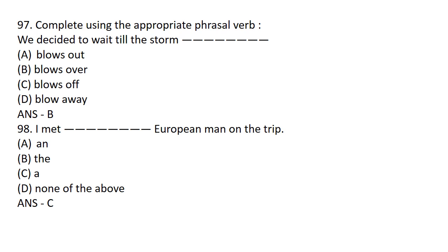Complete using the appropriate phrasal verb: We decided to wait till the storm dash. Option A: BLOWS OUT. Option B: BLOWS OVER. Option C: BLOWS OFF. Option D: BLOW AWAY. Option B is the correct answer — BLOWS OVER. We decided to wait till the storm BLOWS OVER.